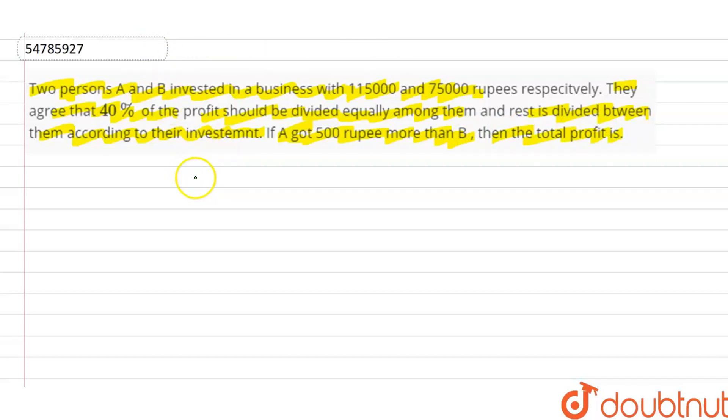So, A and B have the ratio of profit. We can say that for both investments, we can divide and find their ratio. This is 23 ratio 15. Okay? And let's do it. Let the total profit that we have to find be P.